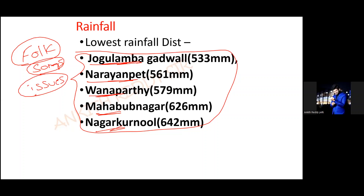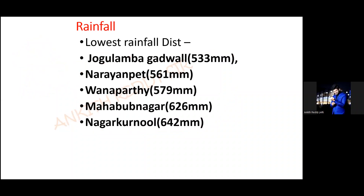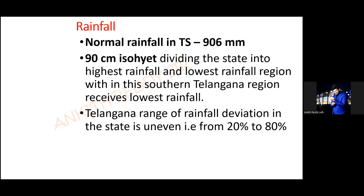There are song writers who write songs about these issues, and these are important in Telangana culture and society. The normal rainfall in Telangana is 90.6 centimeters or 906 mm. This average is used to divide Telangana into highest and lowest rainfall zones.